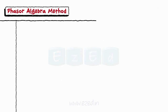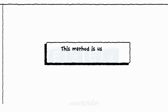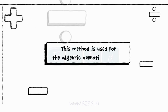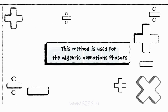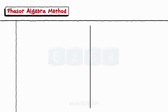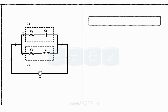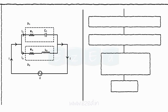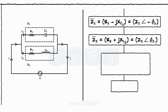Let's go for the phasor algebra method. In this method, we make use of the algebraic rules for the addition or subtraction of the phasors. Taking the same circuit, we represent the impedances Z1 and Z2 in the complex form, and the branch currents are simply added to obtain the total current I in the circuit.